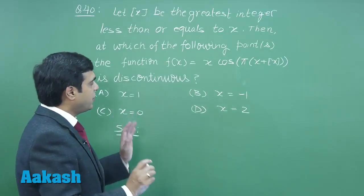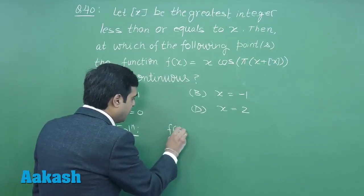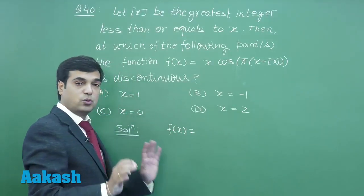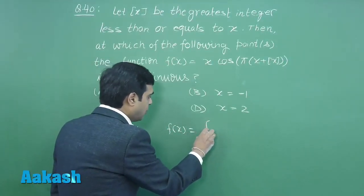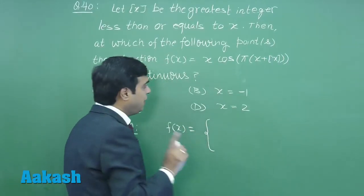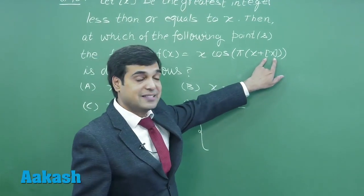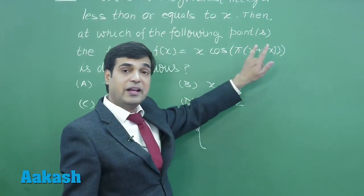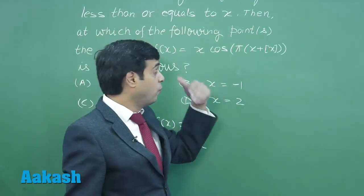We can start this question by considering the given function into two parts. One when greatest integer x is even, second when greatest integer x is odd. Why so?